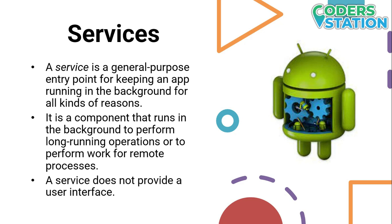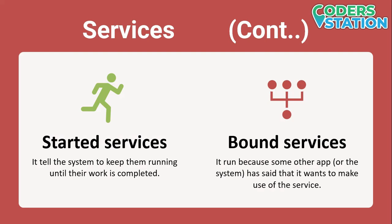There are two types of services that tell the system how to manage an app: Started Services and Bounded Services. Started Services tell the system to keep them running until their work is completed — for example, syncing data in the background or playing music even after the user leaves the app. Bounded Services run because some other app or the system wants to make use of that service, essentially providing an API to another process. If process A is bounded to a service in process B, the system knows it needs to keep process B and its service running for A.